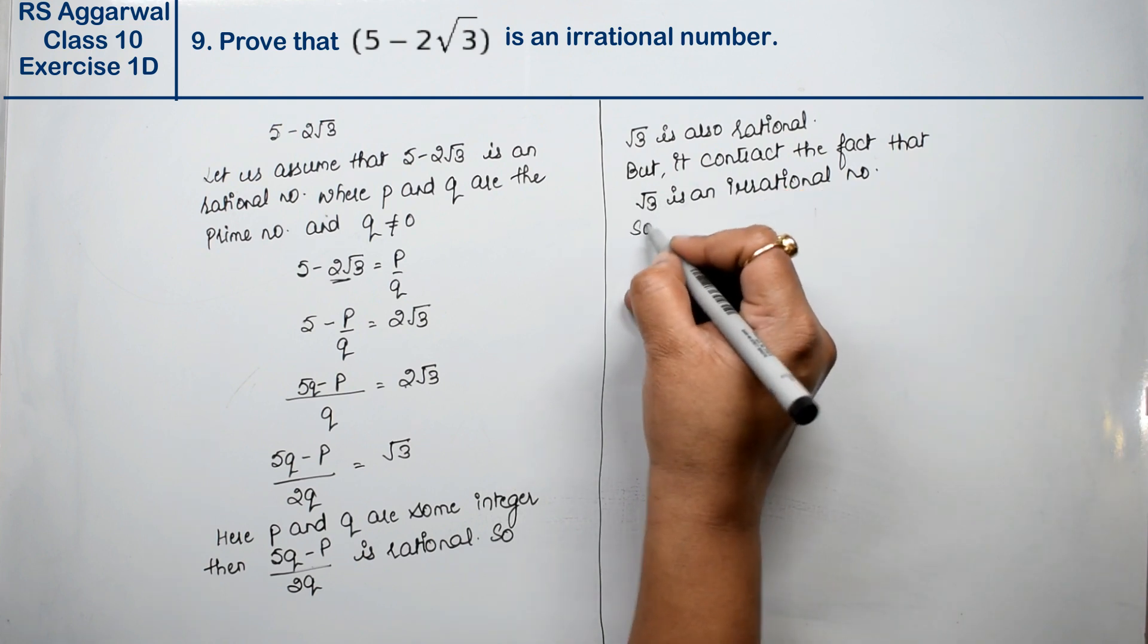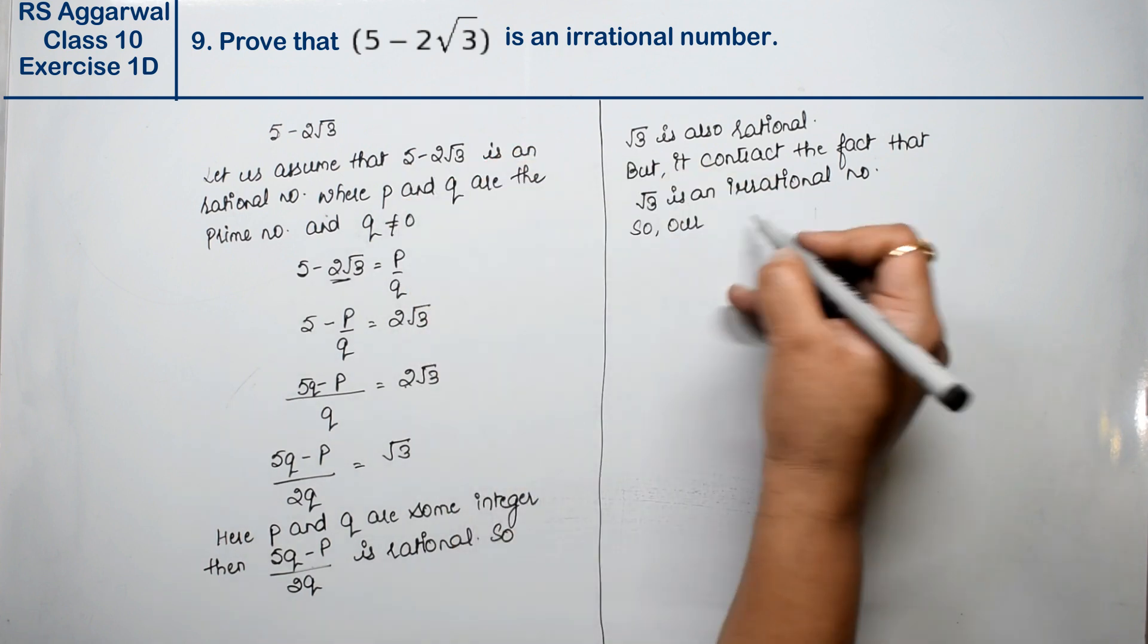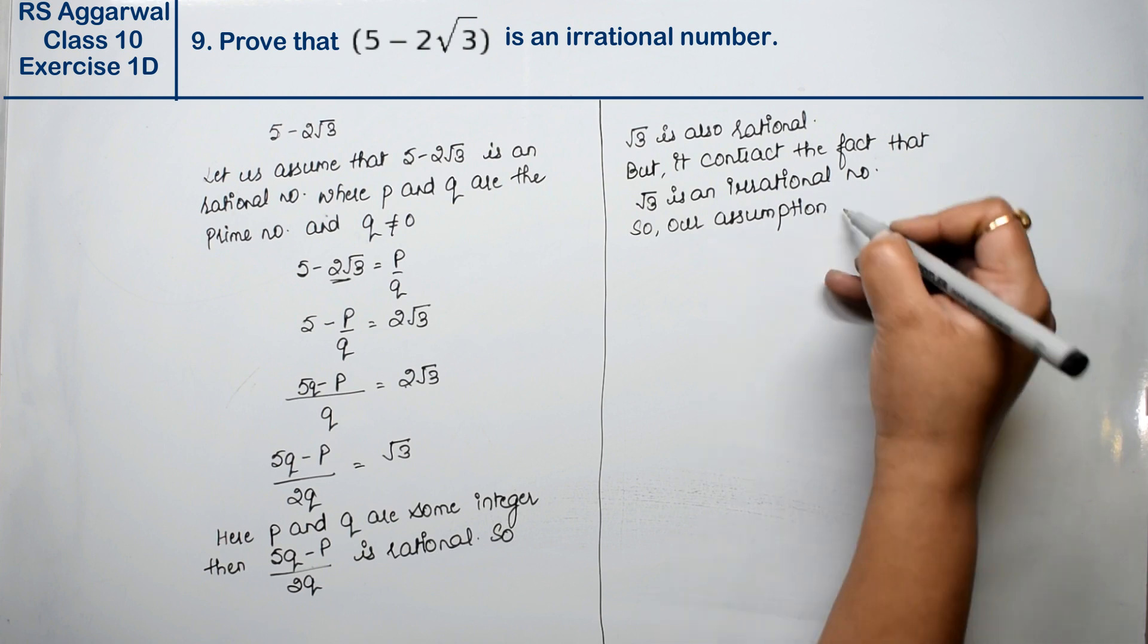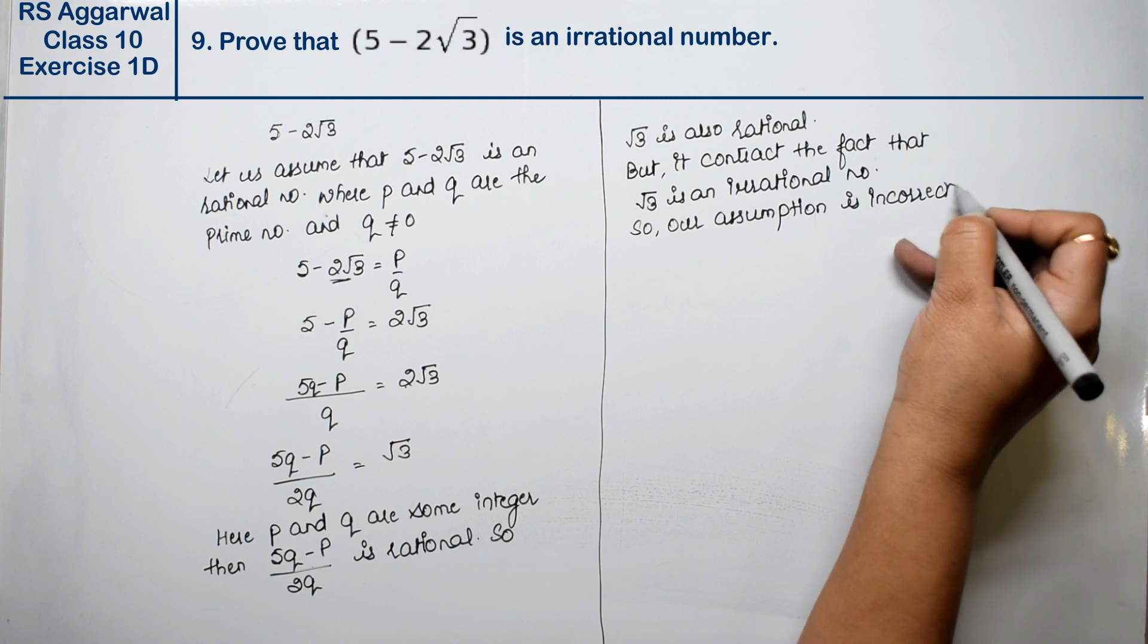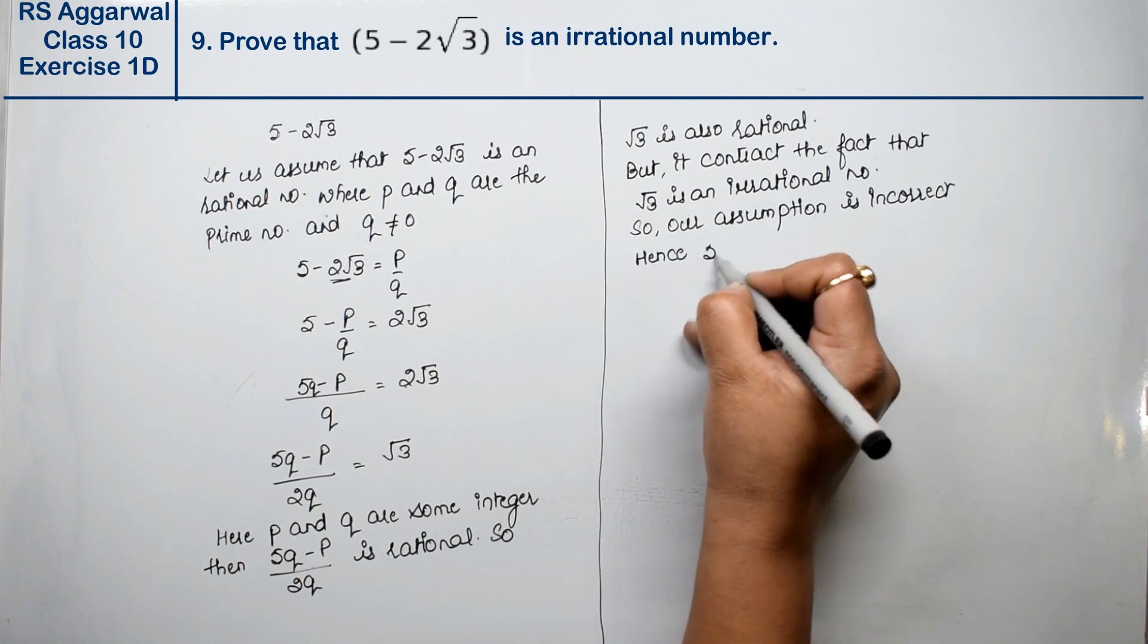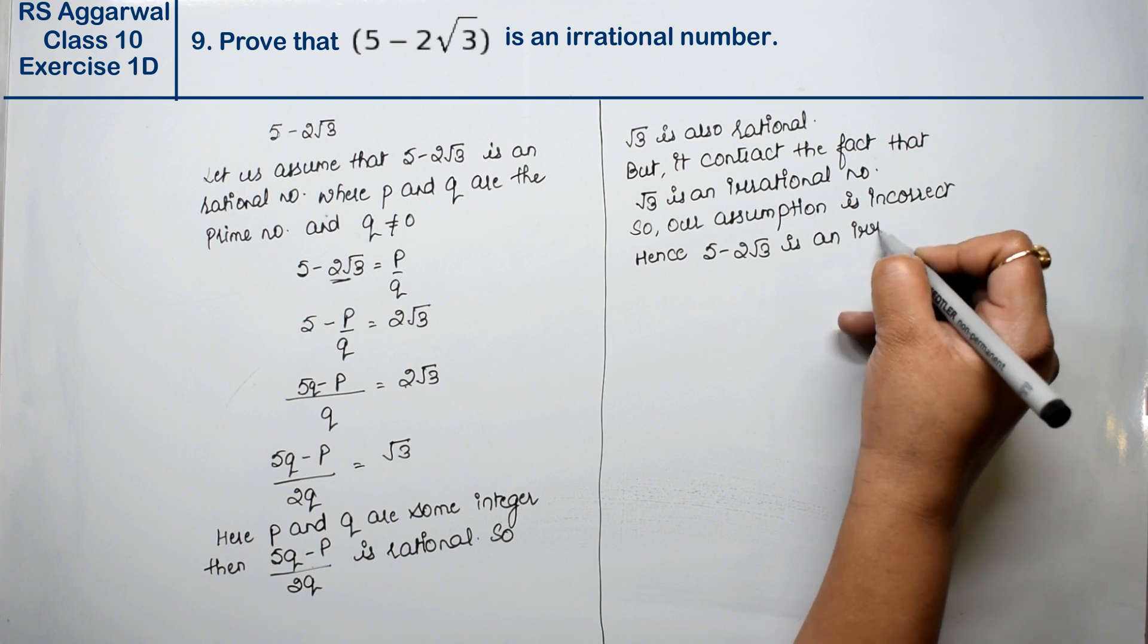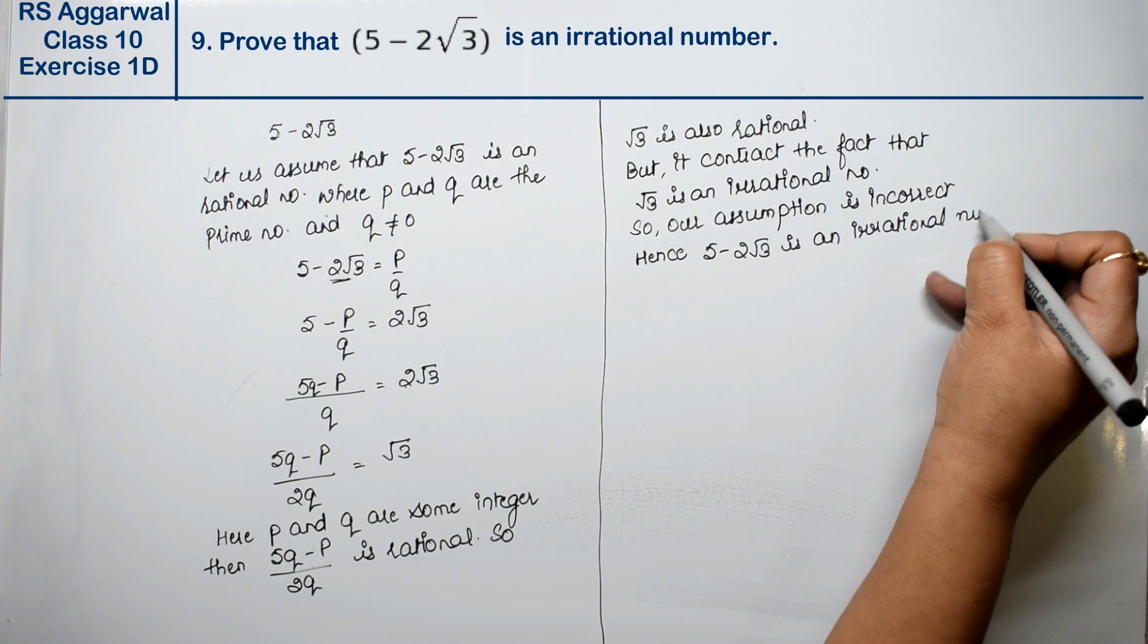Our assumption is incorrect. Our assumption that it is a rational number is incorrect. So our assumption is incorrect. Now our assumption is incorrect, so we can say 5 minus 2 root 3 is an irrational number, is an irrational number. Answer.